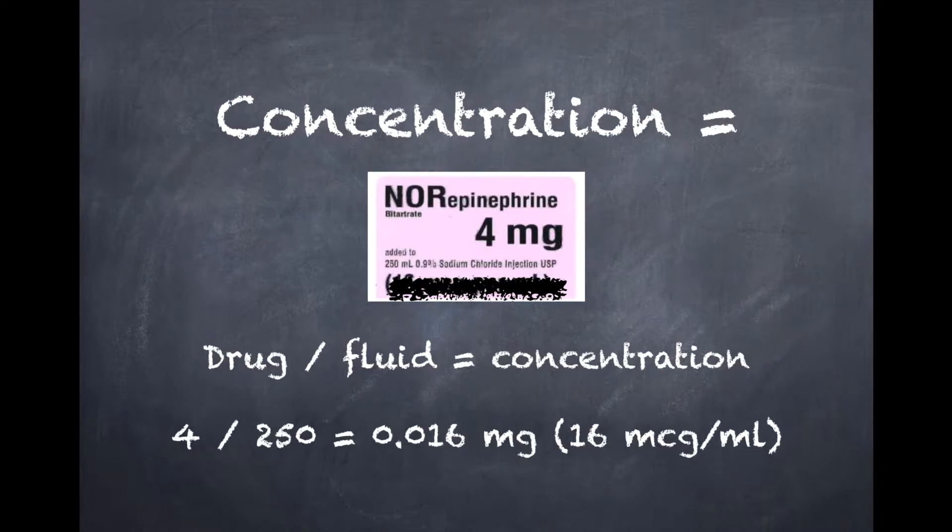So this example would be four milligrams divided by 250 mLs of fluid, and that'll give you 0.016, or to make it simple, 16 micrograms per milliliter.